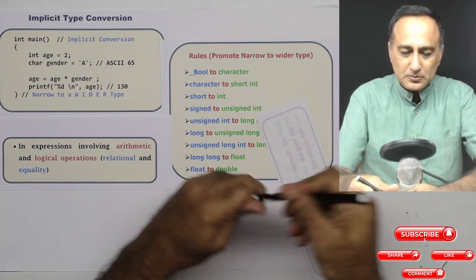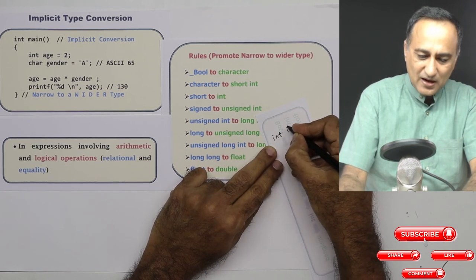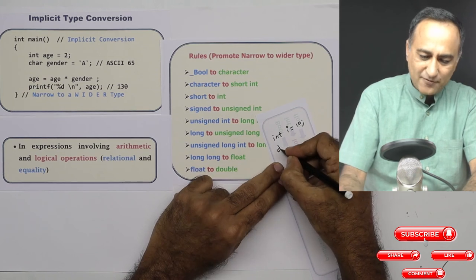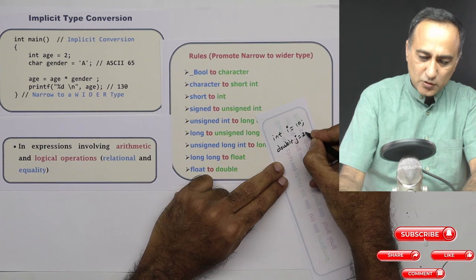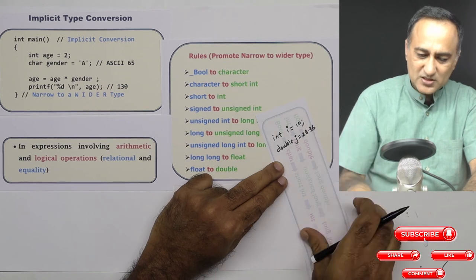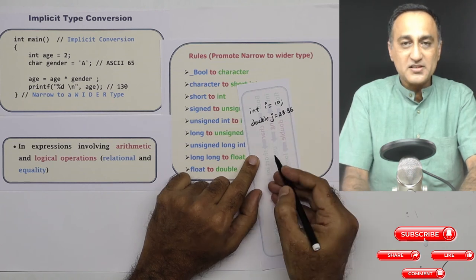Let's say I have int i is equal to 10 and I have a double j is equal to 23.36. I have int i is equal to 10, double j is equal to 23.36.